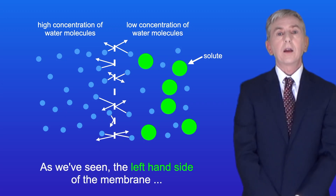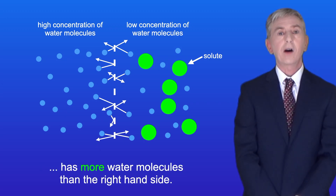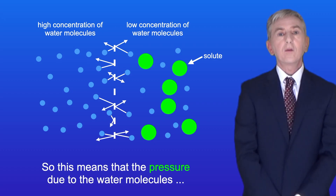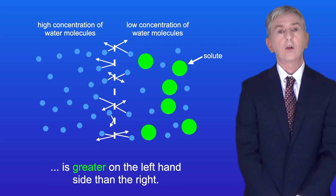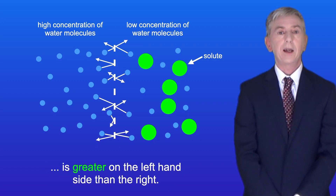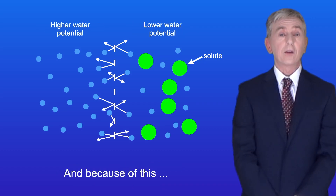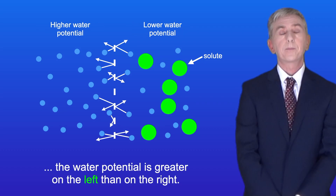Now, as we've seen, the left-hand side of the membrane has more water molecules than the right-hand side. So this means that the pressure due to the water molecules is greater on the left-hand side than the right. And because of this, the water potential is greater on the left than on the right.